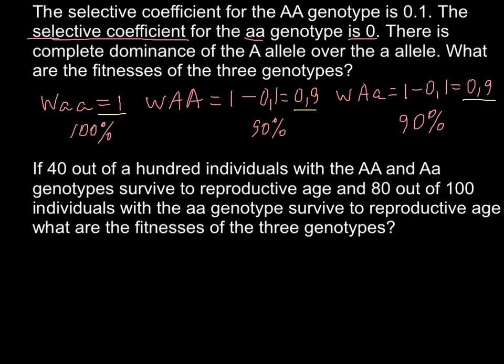So how are we going to solve this problem? First of all, we have to find the genotype that shows the best survival results. This is going to be the homozygous recessive, because 80 out of 100 would survive. For the other genotypes, 40 out of 100 — that is homozygous dominant and heterozygous — would survive. So the homozygous recessive shows the best results.